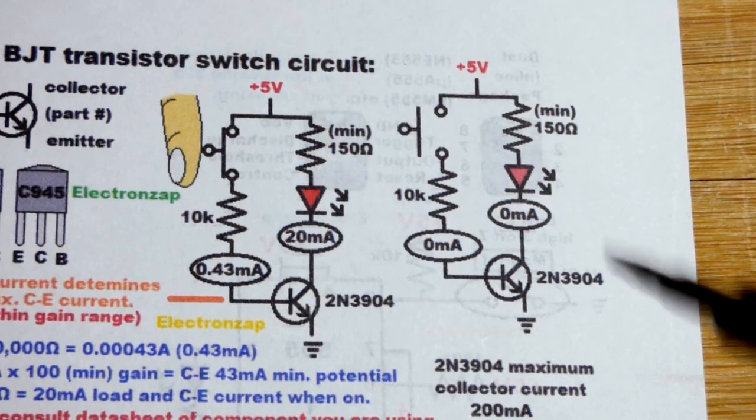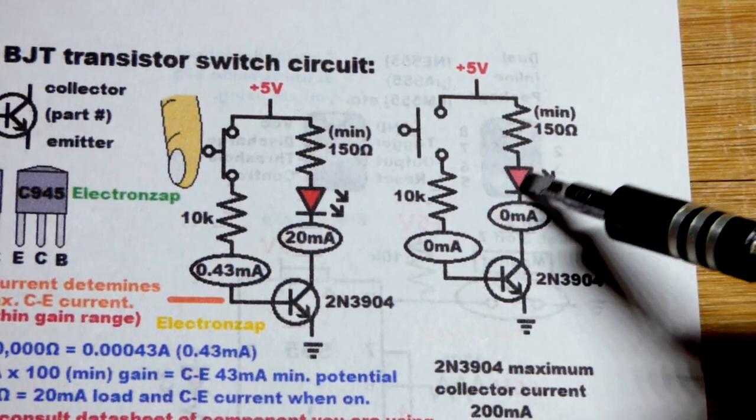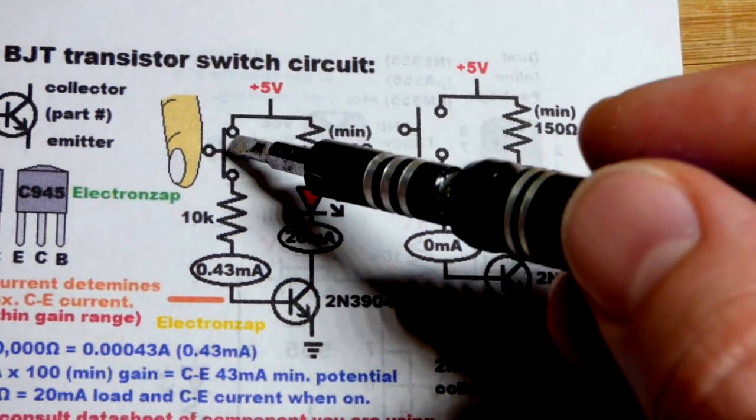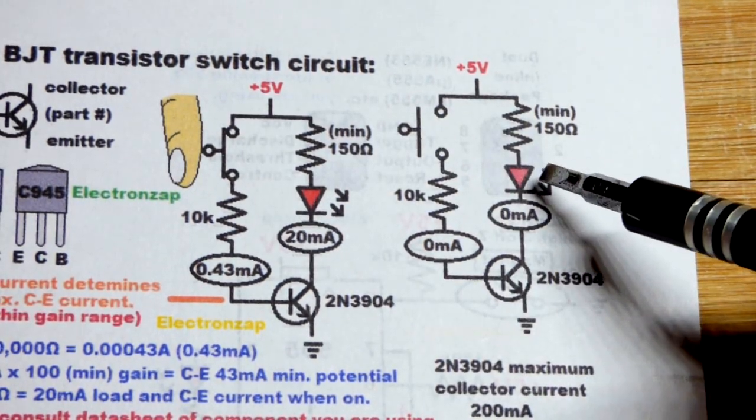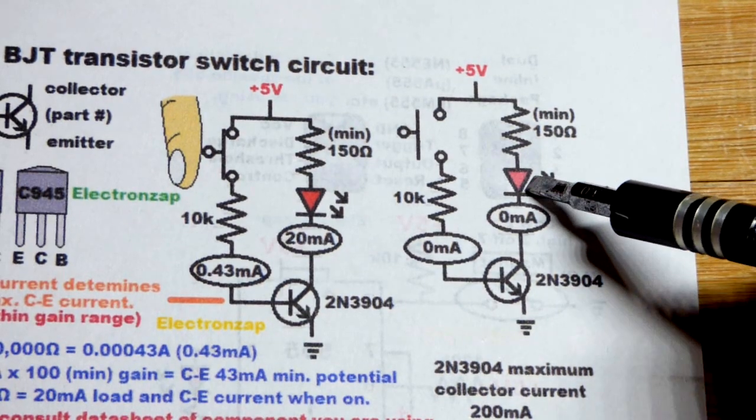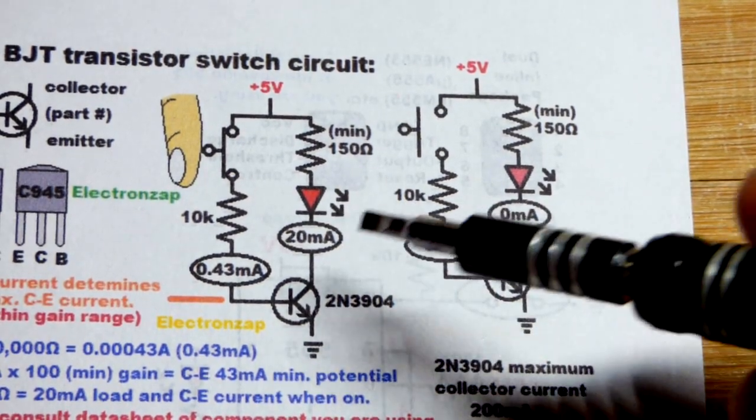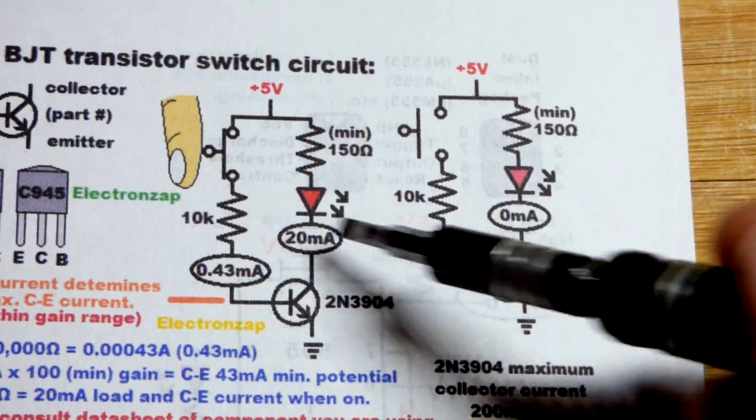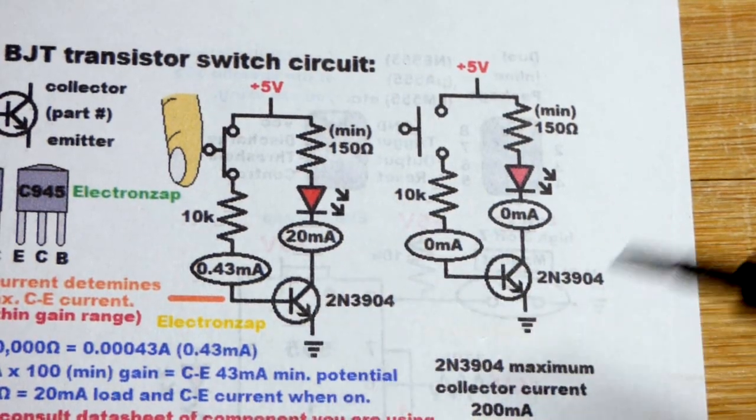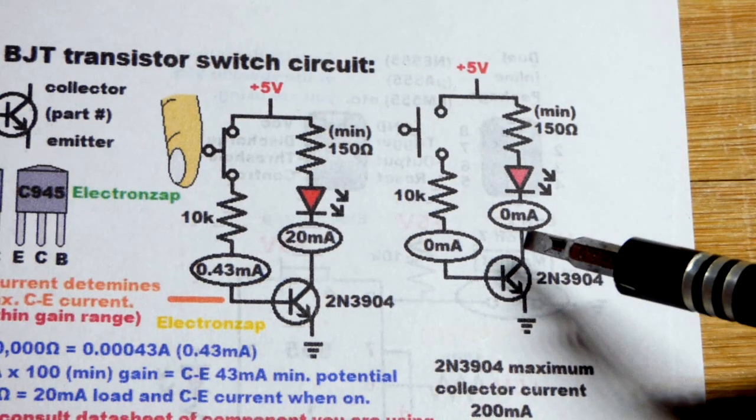So now the basic premise of a switch circuit, whether transistor, mechanical switch, or whatnot, is either the load is turned off, no current is flowing through it, or the load is turned on fully right there, where current is flowing through it as good as it can go. We'll talk about that a little bit more coming up.